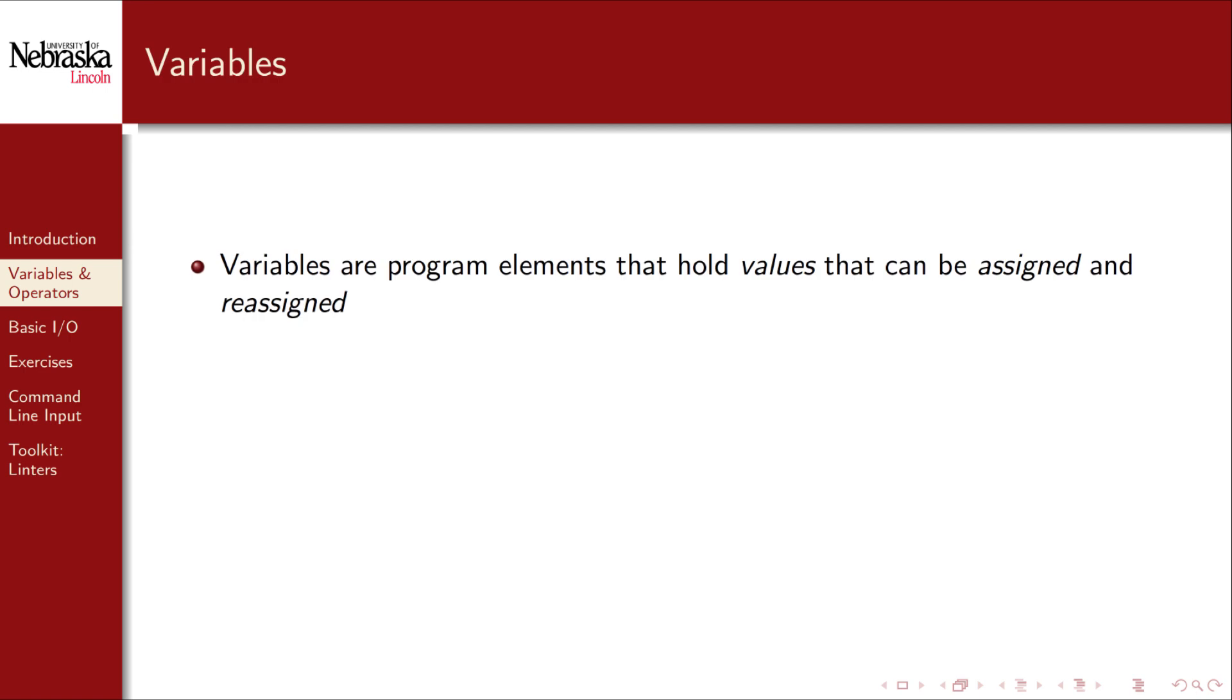Variables are program elements that can hold values. In general we can assign and reassign the values stored in variables. C is what's known as a statically typed language. We won't go into detail about what that means now, but basically every variable has both a name and a fixed type.